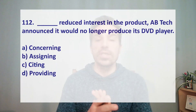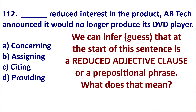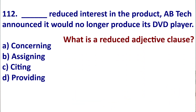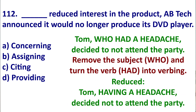Let's get into this question. We can guess that at the start of this question is a reduced adjective clause or a prepositional phrase. A reduced adjective clause works this way. You have the original sentence: 'Tom, who had a headache, decided not to attend the party.' In the adjective clause, you can remove the subject 'who' and turn the verb into -ING. So you could say: 'Tom, having a headache, decided not to attend the party.' So 'having a headache' is a reduced adjective clause.